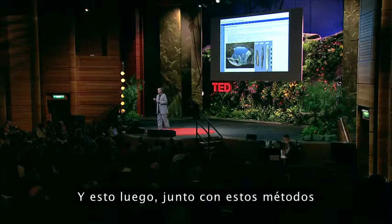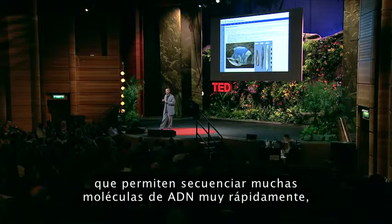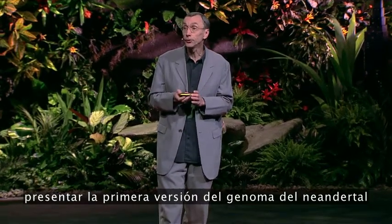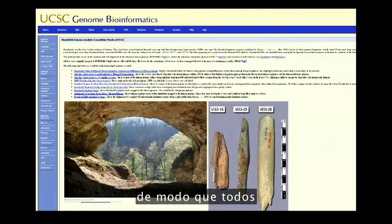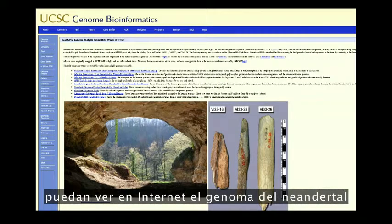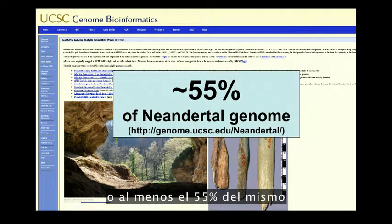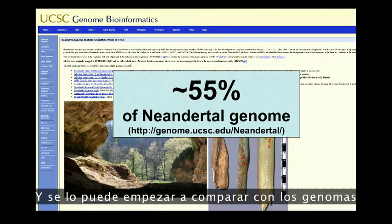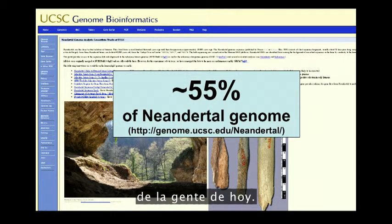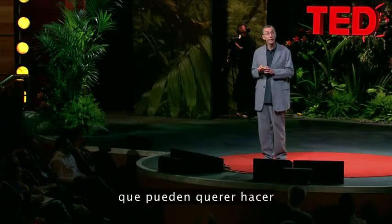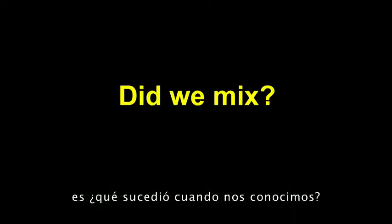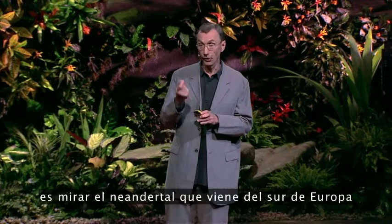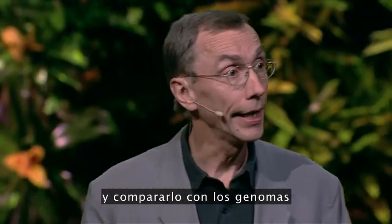In conjunction with methods that allow very many DNA molecules to be sequenced very rapidly, this allowed us last year to present the first version of the Neanderthal genome, so that anyone can now look on the internet at the Neanderthal genome — or at least the 55% of it that we have been able to reconstruct so far — and begin to compare it to the genomes of people who live today. One question you may then want to ask is: what happened when we met, did we mix or not?